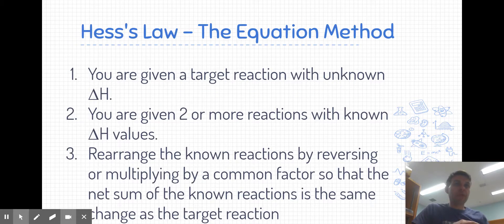We're going to go through an example, but let me just explain the overall approach to making use of Hess's law. We are given a target reaction with an unknown heat of reaction, an unknown delta H value that we're trying to find. In order to find that unknown heat of reaction, we are going to be given at least two, and often more, other reactions with known delta H values. These are my known reactions.